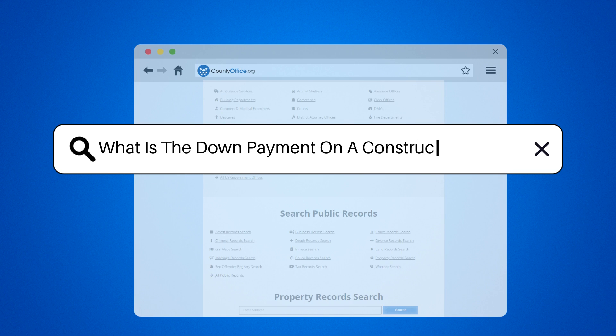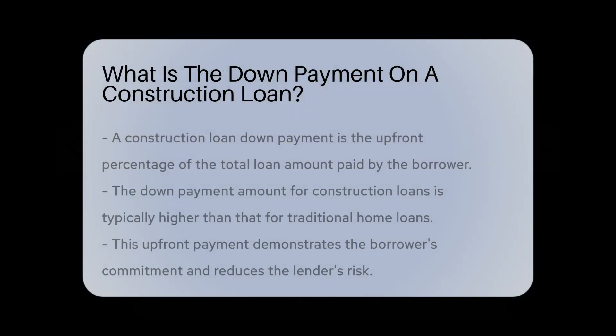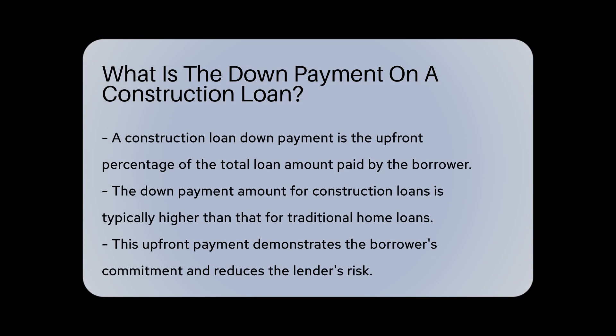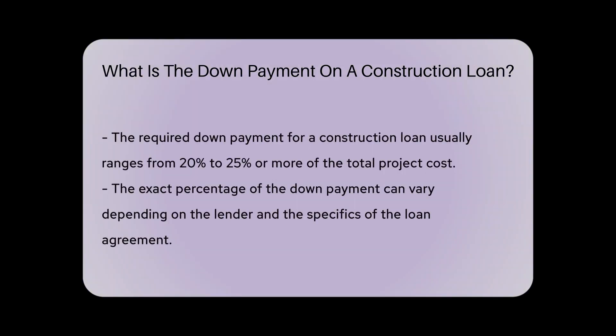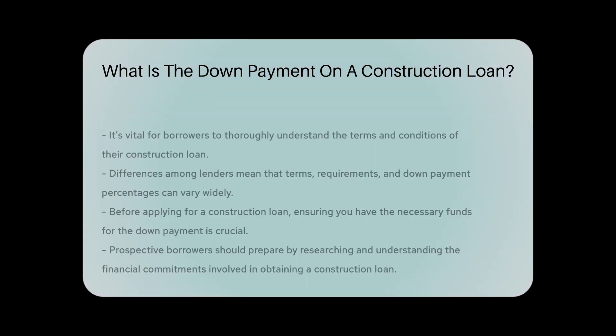What is the down payment on a construction loan? A down payment on a construction loan is a percentage of the total loan amount that the borrower must pay up front. This amount varies but is typically higher than traditional home loans. It serves as a commitment from the borrower and reduces the lender's risk. Construction loans are used to finance building or renovating a property and are different from regular mortgages. The down payment can range from 20% to 25% or more of the total project cost. It is crucial to understand the terms and requirements of the specific construction loan as they can differ among lenders.